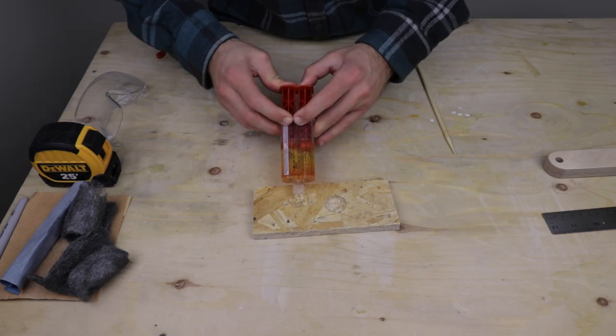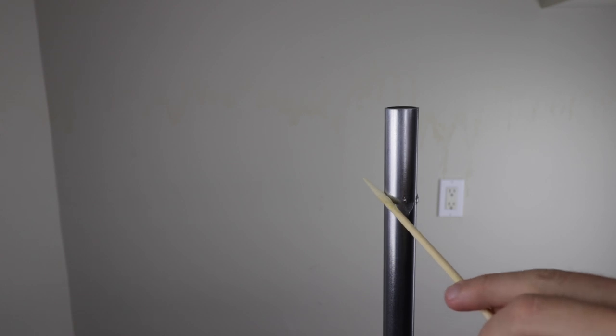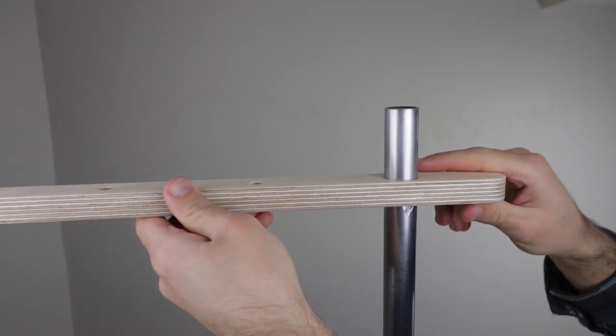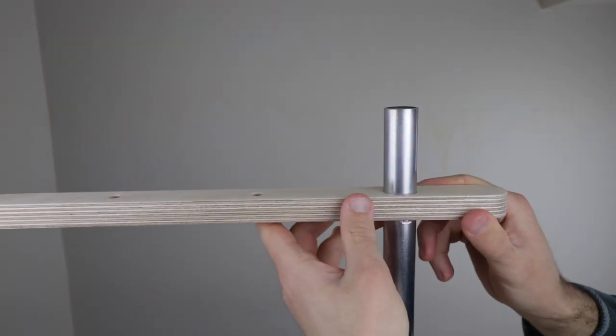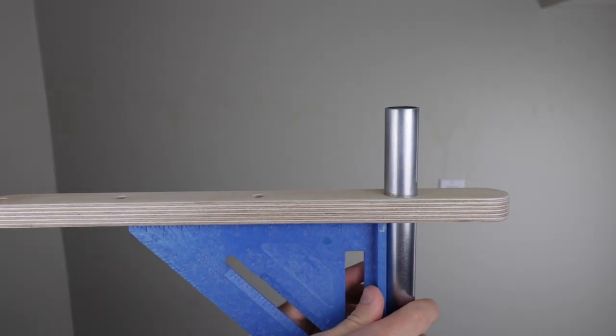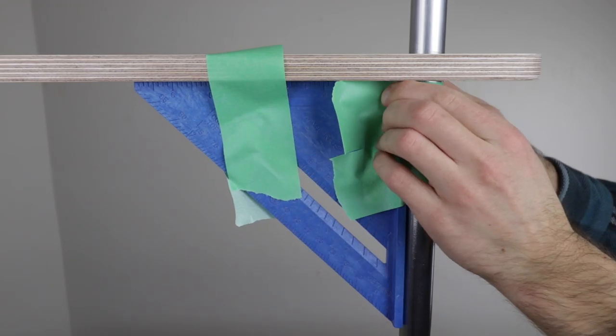I mixed up some two-part epoxy and applied it sparingly to the conduit. With the arm in place, I taped on a framing square to help hold it at 90 degrees.